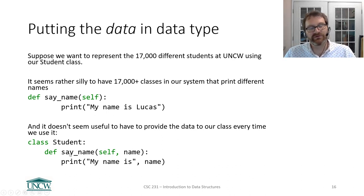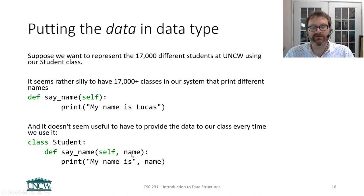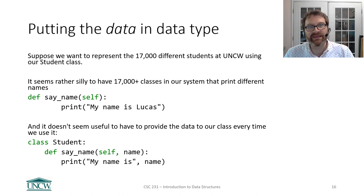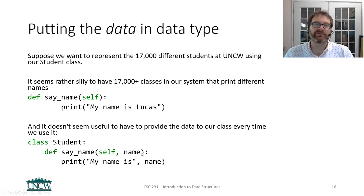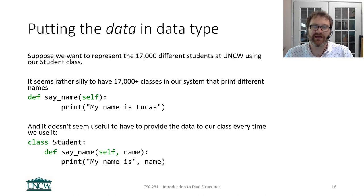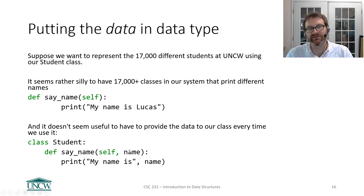We evolved a little bit and created a method — we made it so that our sayName method took a parameter, so when you called sayName you could pass whatever value you wanted. That's a bit of an improvement, but still, if you wanted to say the name of 17,000 different students, you'd still need to know their names because you have to give the name to the student class. So that's not great.